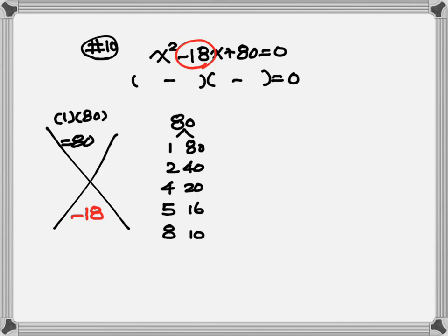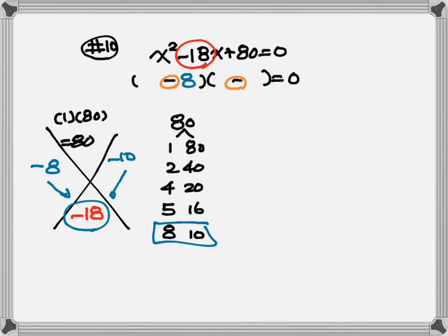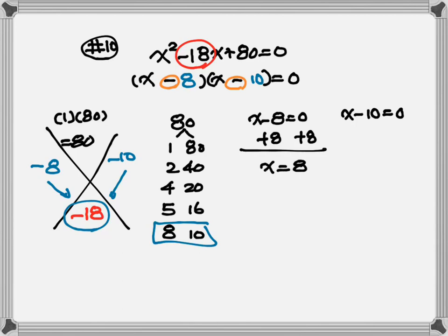After you find all the factors, look inside the parentheses. Both signs are minus and minus — same sign — so you're going to add. Which pair of numbers adds together to give the middle number? Minus 8 and minus 10 give me negative 18. So I put minus 8 here, minus 10 here. Variable is x, so put x and x. Then set the number in each parenthesis equal to 0 and solve for x. So x equals 8, and x equals 10.